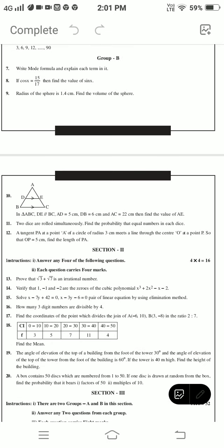Section 2: Answer any 4 questions. Each question carries 4 marks for 16 marks. Prove that root 3 plus root 7 equals irrational number. Verify that 1, -1, and -2 are zeros of the cubic polynomial x³ + 2x² - x - 2. Solve x - 7y + 42 = 0, x - 3y - 6 = 0 pair of linear equations by using elimination method. How many three-digit numbers are divisible by 4? Find the coordinates of the point which divides the joint of A(-6, 10) and B(3, -8) in the ratio 2:7.